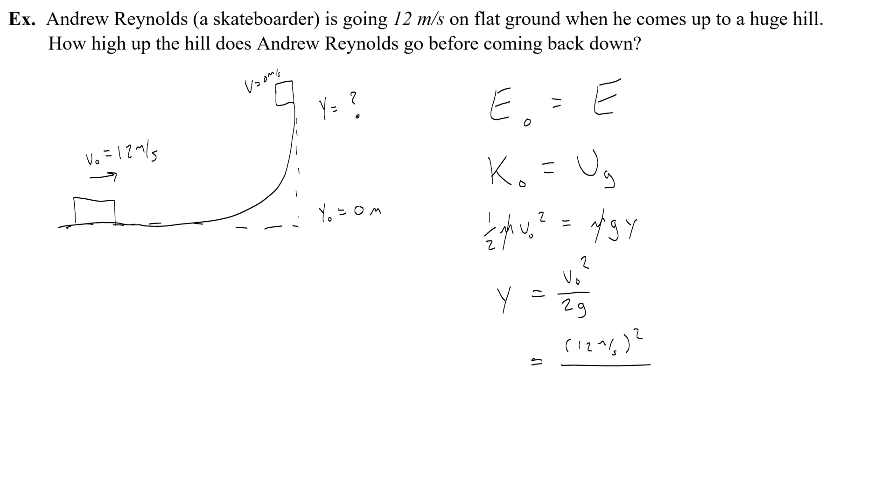That's the equation for finding the height, and this would be 12 meters per second squared, so 144 over 2 times 10 meters per second squared, or 20. So 144 over 20 is going to give you 7.2. That's how high up the skateboarder or our box goes.